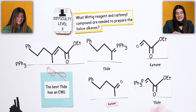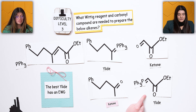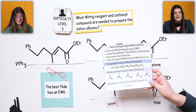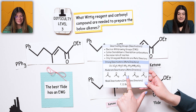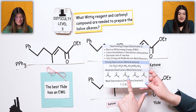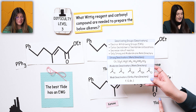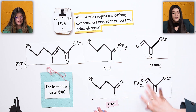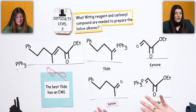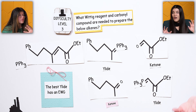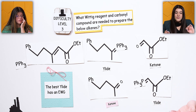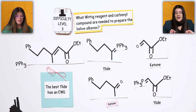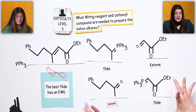What you said was key — the best ylid is the one that has an electron withdrawing group. Which one has an electron withdrawing group? We can see it right here. That is an electron withdrawing group, so that is the best choice. Technically both answers aren't wrong, but one is clearly better.